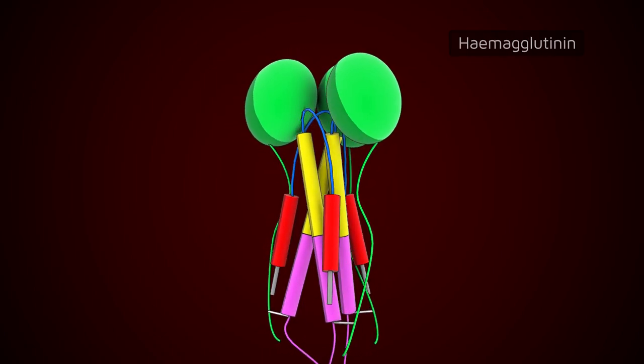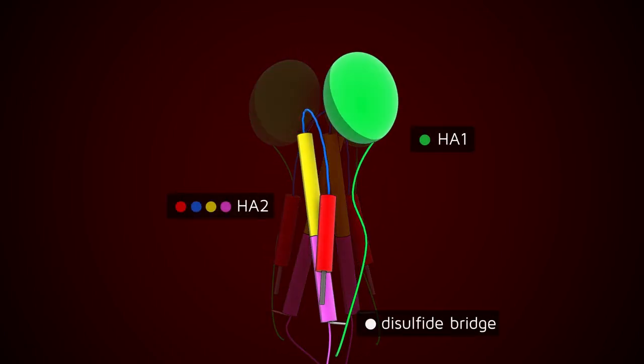It is organized in trimeric spikes, each spike comprising two subunits called HA1 and HA2, connected by a disulfide bridge.